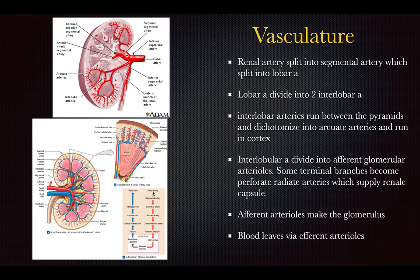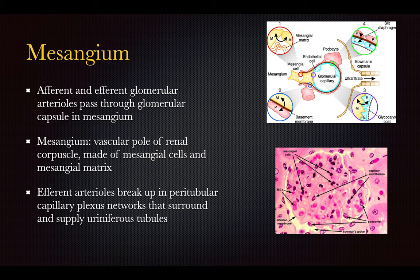Blood comes in from the renal artery and leaves via the renal vein. The mesangium contains afferent and efferent glomerular arterioles that pass through the glomerular capsule. The mesangium is the vascular pole of the renal corpuscle, made of mesangial cells and mesangial matrix — which consists of ground substance, collagen fibers, and reticular fibers. The efferent arterioles break up into the peritubular capillary plexus, which surrounds and supplies the uriniferous tubules.